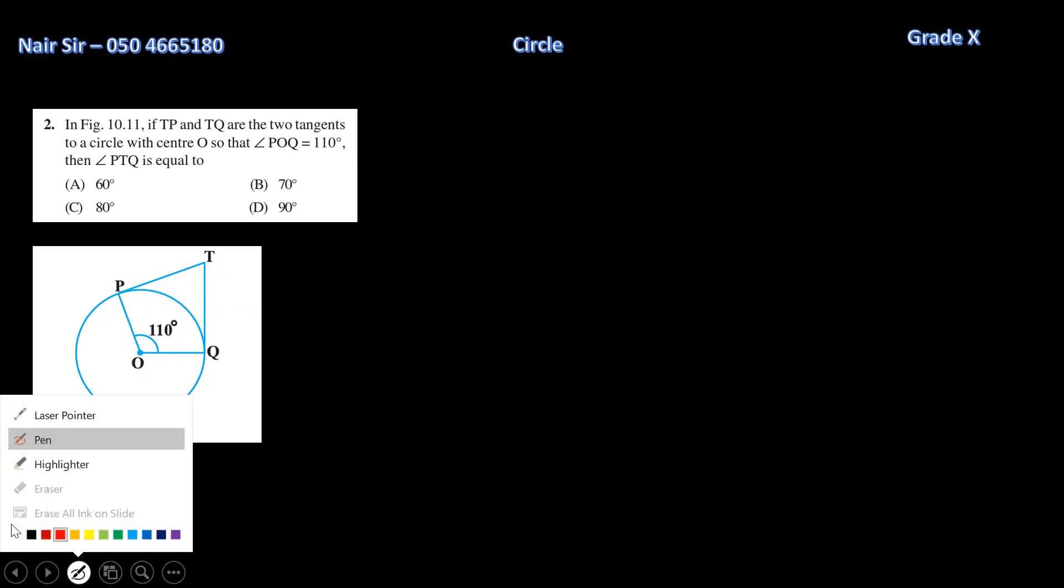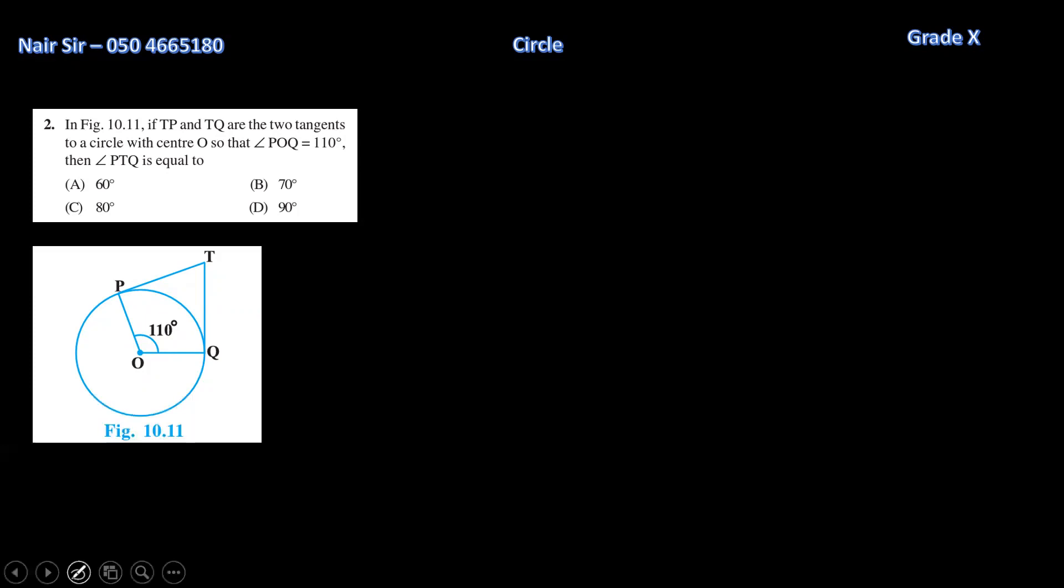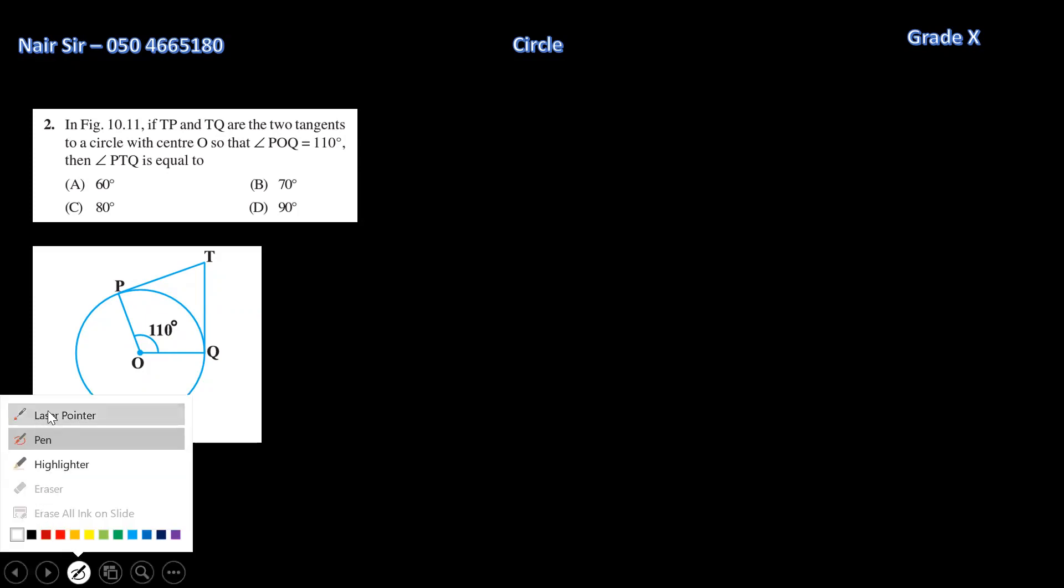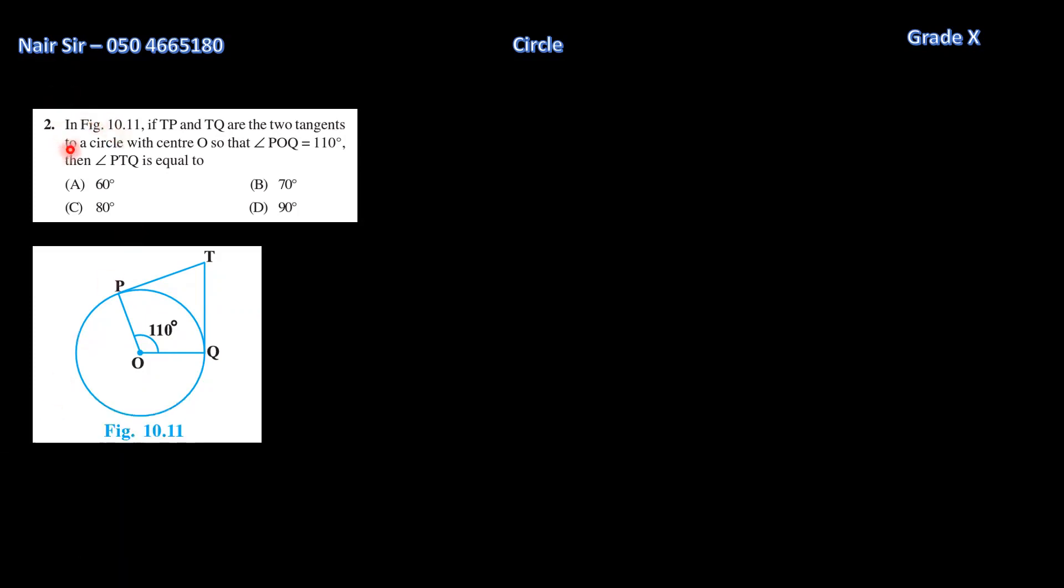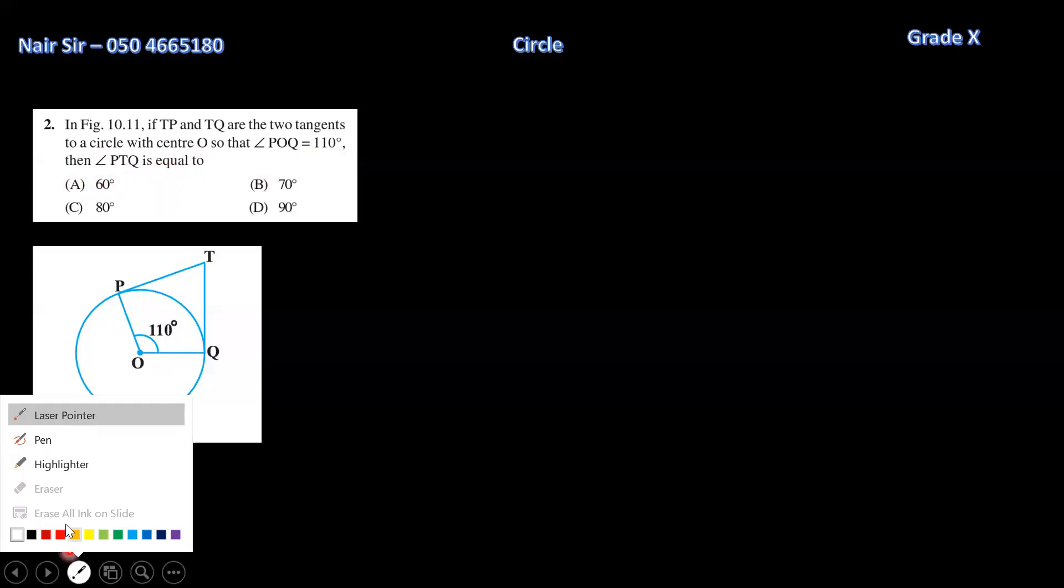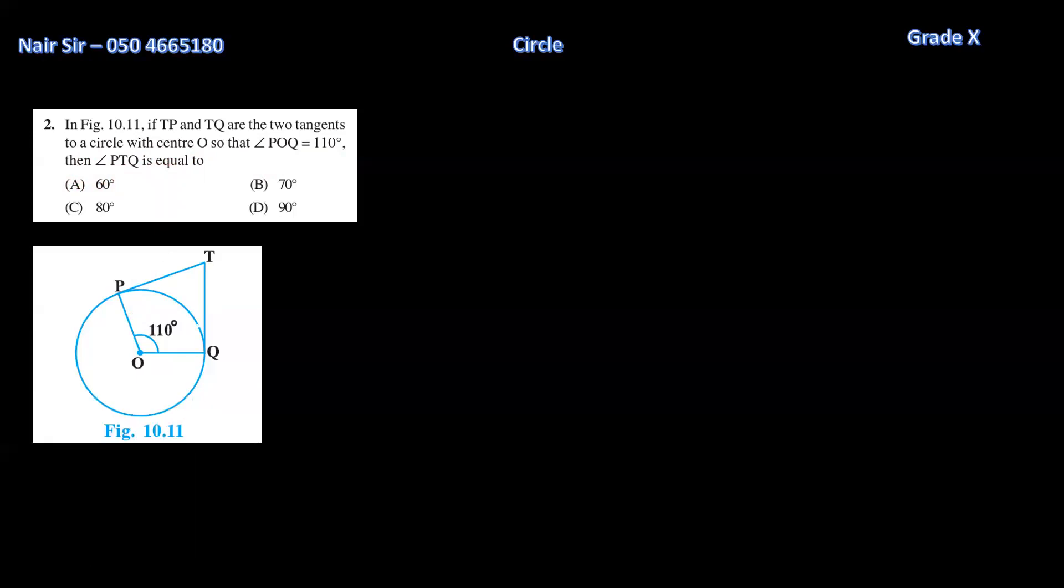Let's see what the question is asking us. In figure 10.11, if TP and TQ are two tangents to a circle with center O, so that angle POQ is 110, then PTQ is equal to what? What is PTQ? PTQ kya hai?